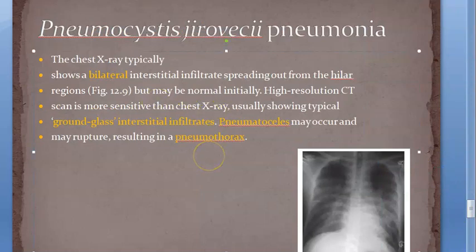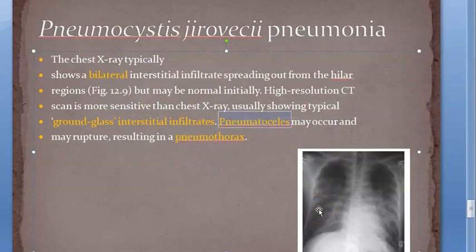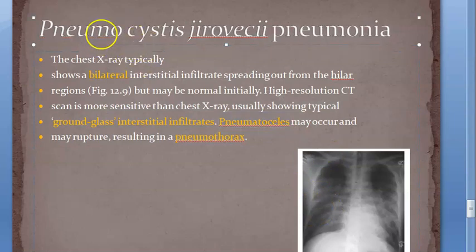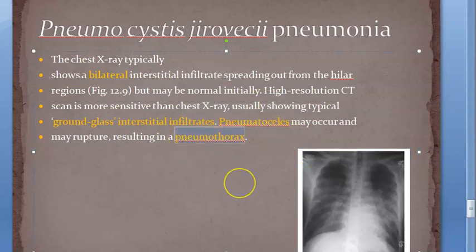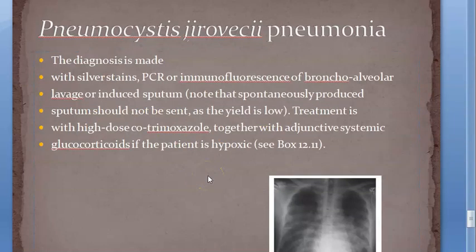On X-ray: bilateral ground glass interstitial infiltrates. There will also be pneumatoceles - these can rupture and cause pneumothorax. Hence the name: pneumo is air. Pneumothorax means air in the pleural cavity, and as a result the lung cannot expand, so the person will have dyspnea and insufficient oxygen.